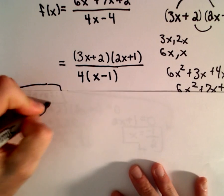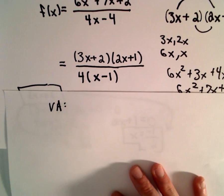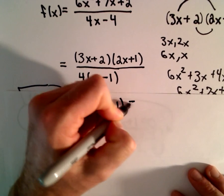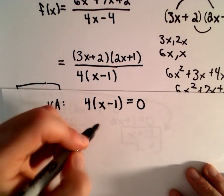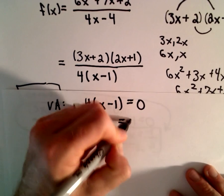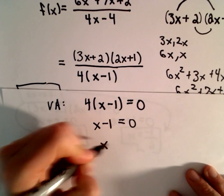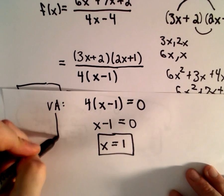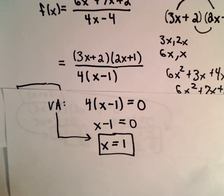And likewise, to get the vertical asymptotes, all I have to do is take the denominator and just set it equal to 0. So you can divide by 4. That will just leave us with x - 1 = 0. We can add 1 to both sides. That will give us x = 1. So that's going to be our vertical asymptote.